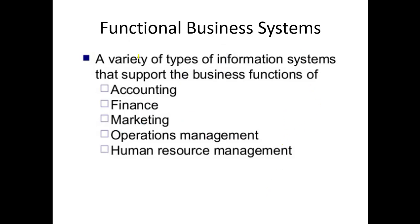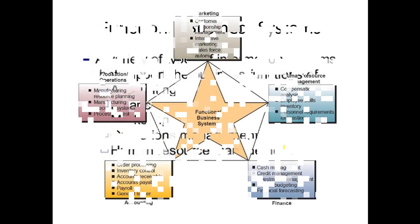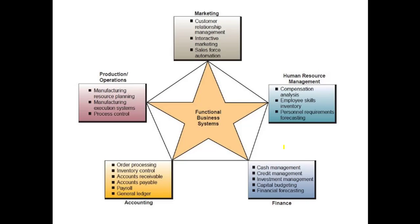Functional business systems refer to a variety of information systems that support business functions like accounting, finance, marketing, operations management and human resource management. Marketing systems include customer relationship management, interactive marketing and sales force automation. Human resource systems include compensation analysis, employee skills inventory and personnel requirements forecasting. Finance systems include cash management, credit management, investment management, capital budgeting and financial forecasting. Accounting includes order processing, inventory control, accounts receivable, accounts payable, payroll and general ledger. Production and operations includes manufacturing resource planning, manufacturing execution systems and process control.